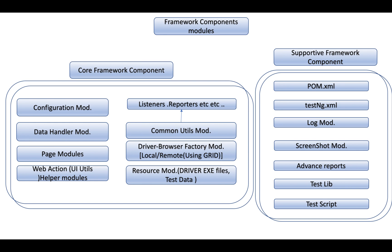In this framework we'll be using an IDE called Eclipse, a build tool called Maven, and a unit testing framework called TestNG. These are the high-level tools we're going to work with. We'll set up a project using Maven, integrate TestNG with Maven, and then write the core components — the core framework architecture — one module at a time. After the core components are developed, we'll develop the supporting framework components and plug them in to work together.